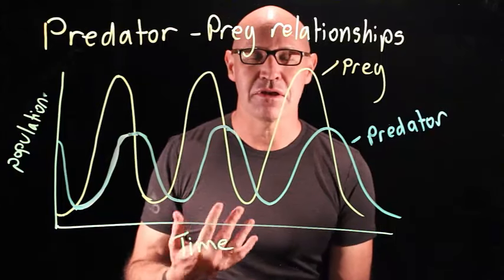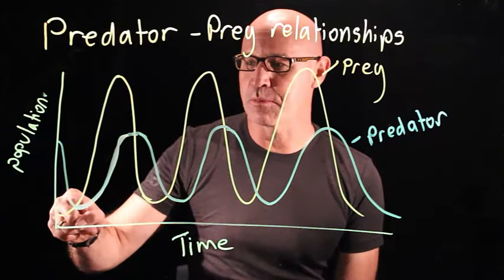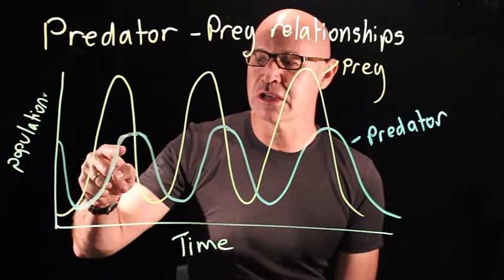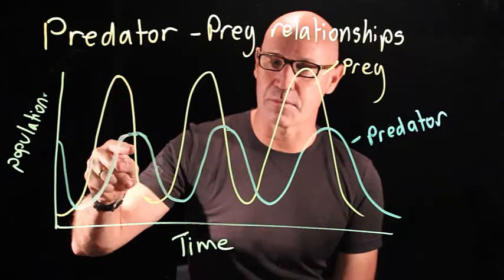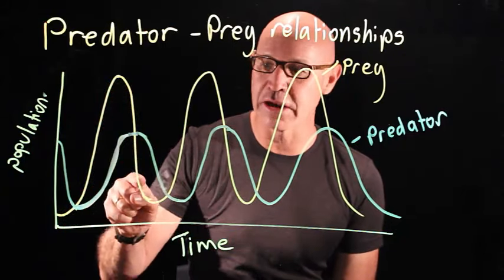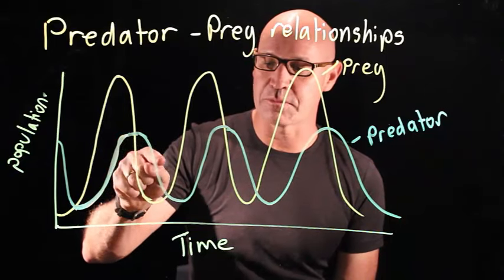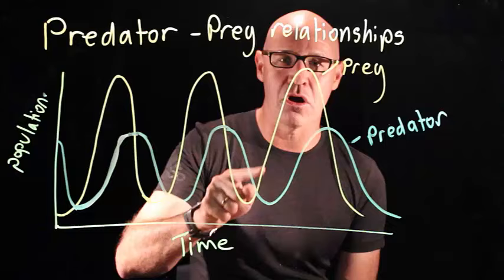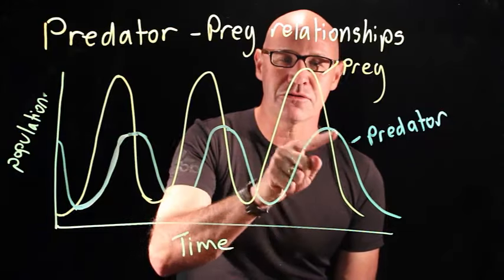The population peaks because we have an increased number of predators. If there's plenty of food for the predators, their population is going to increase. So as their population increases, the prey population peaks and starts to drop down. When there's less food for the predators, the predator population peaks and drops down. And then they both continue on with this cycle — they're interrelated.